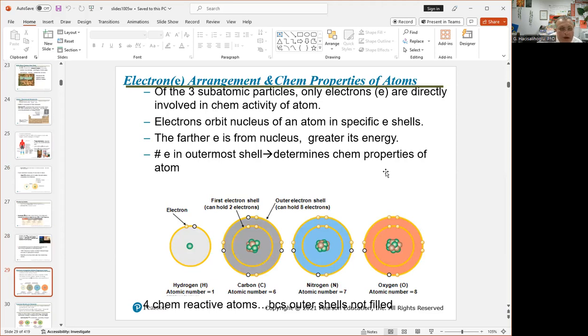Electron arrangements - an atom can have one shell, two shells, three shells, and each shell has a number of electrons on it. The farther away the shell is, the greater the energy they have. If there are more than one shell, the outermost shell is the most important that we focus on - the outer shell.